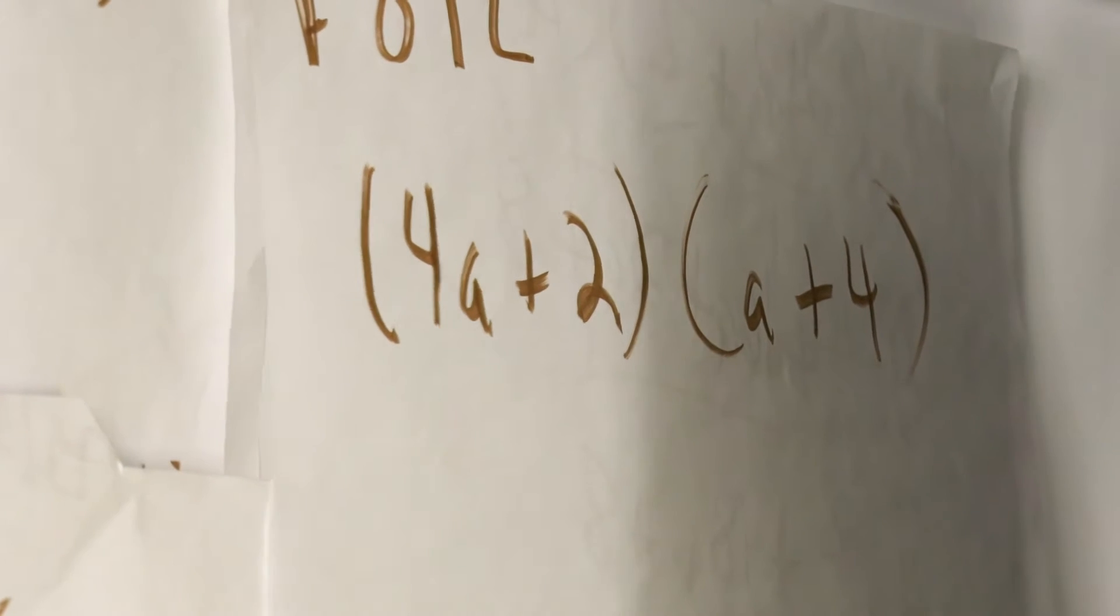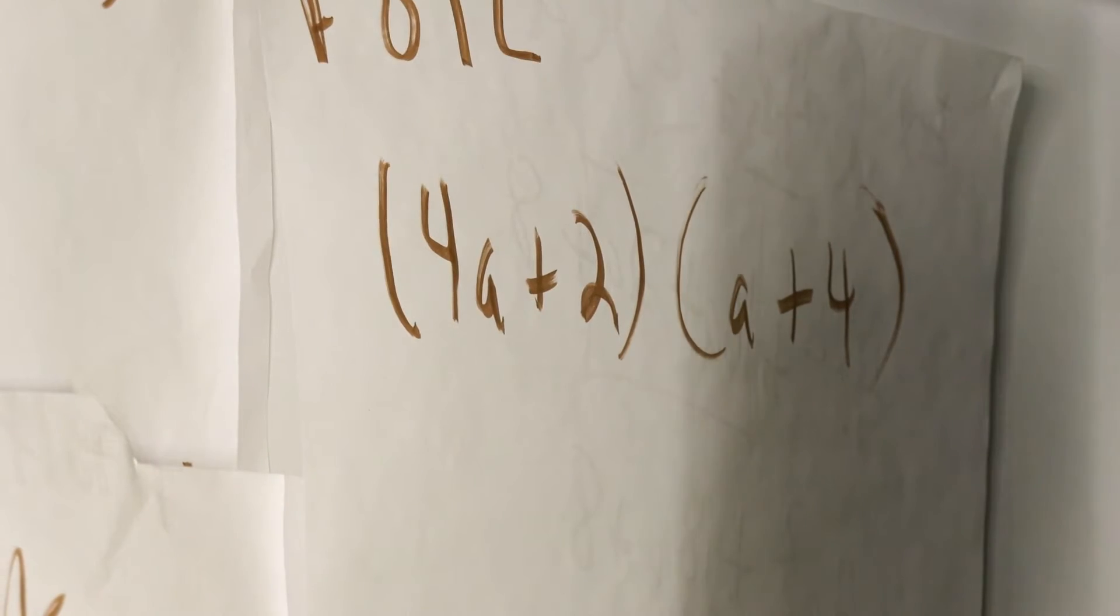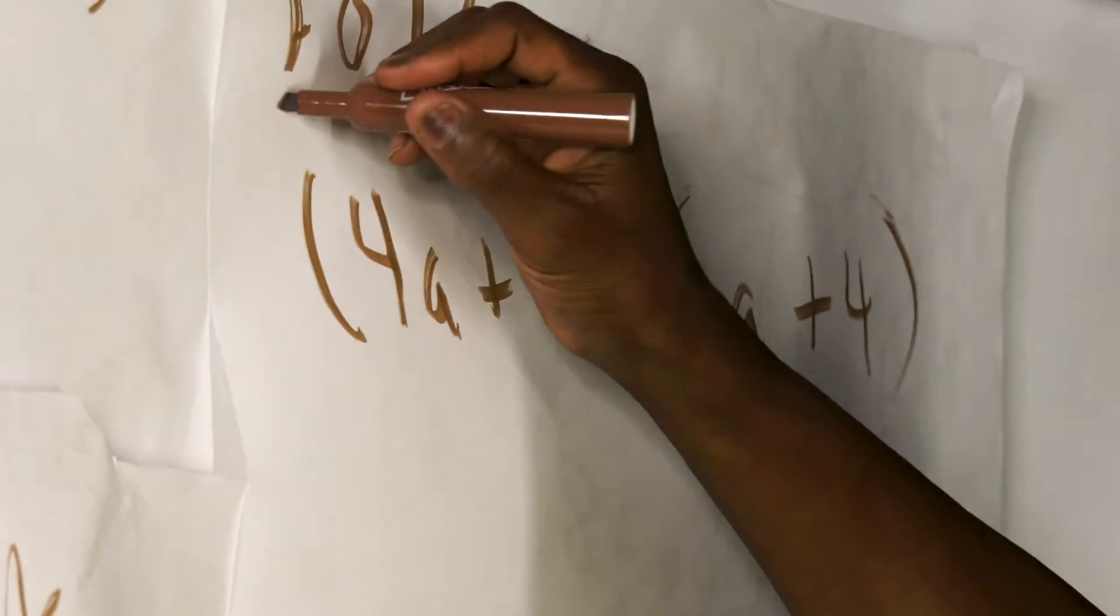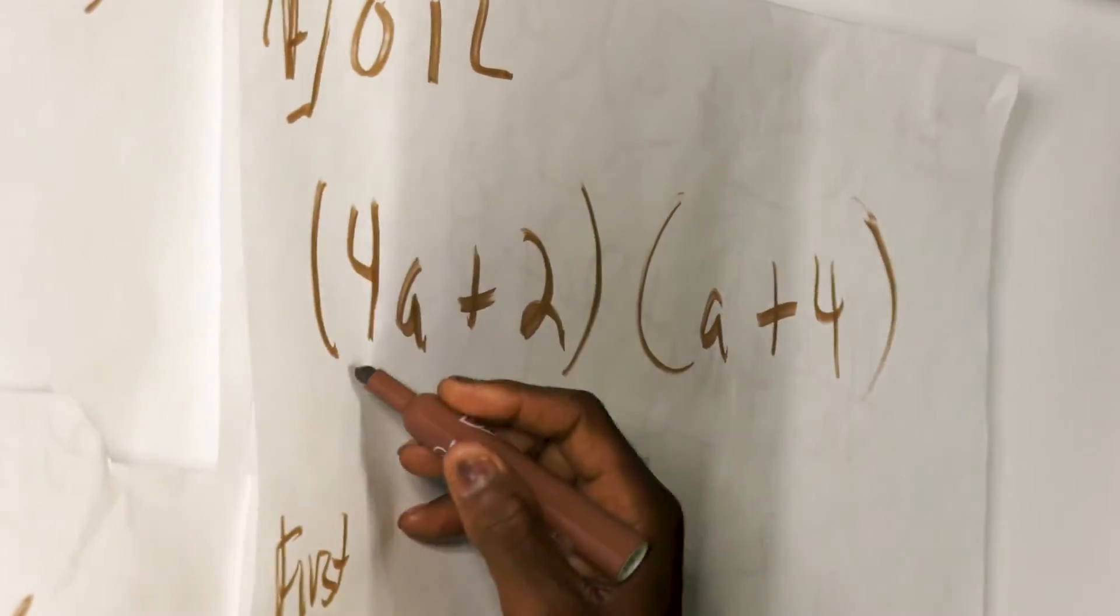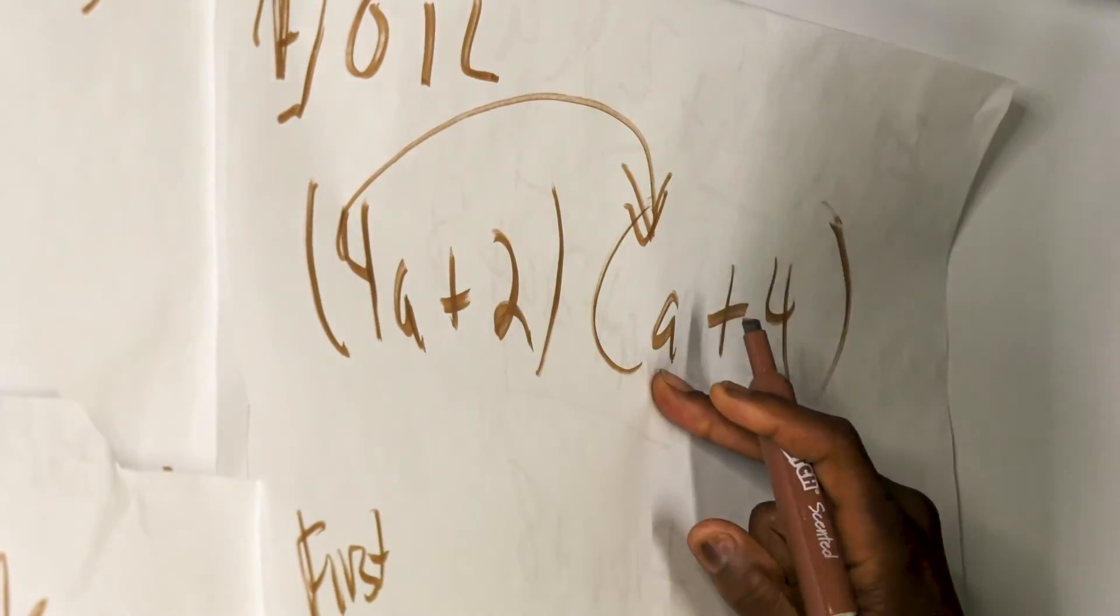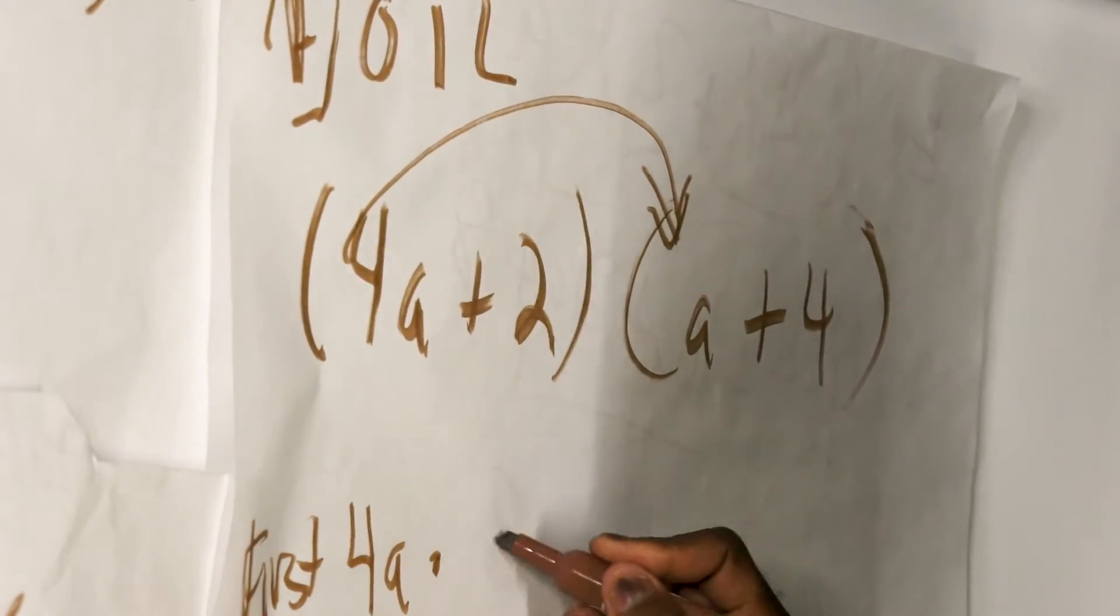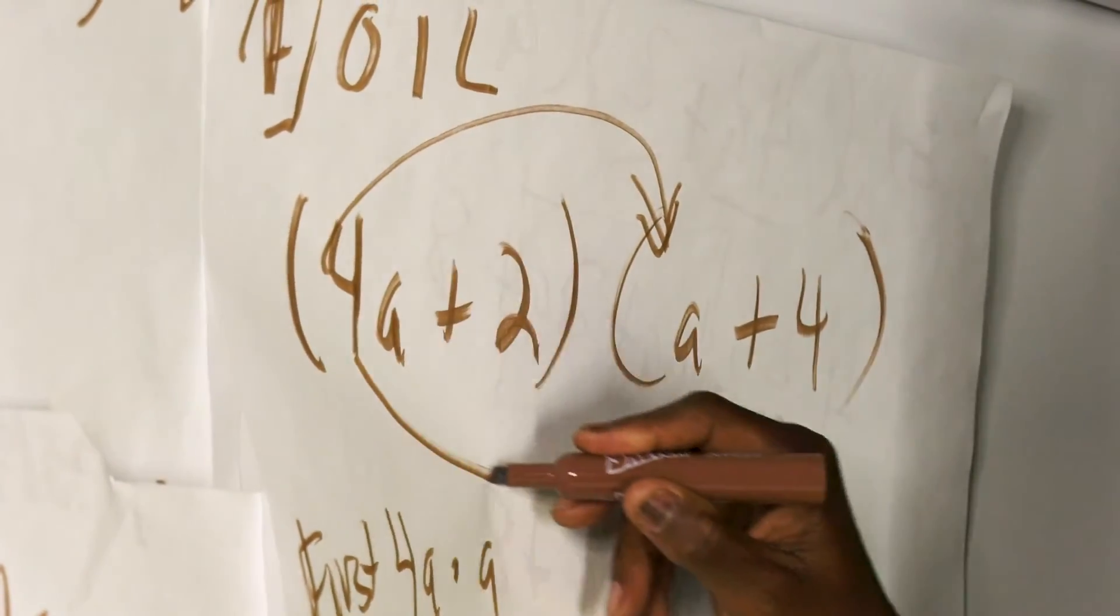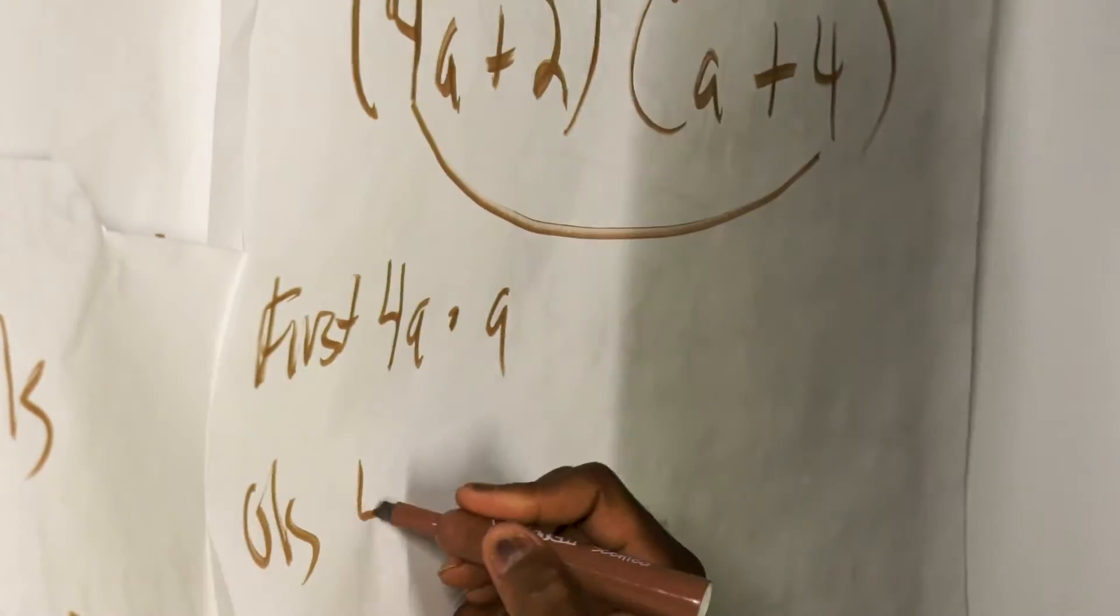So we want to think about the rules regarding distributive property because even when you're using the FOIL technique, you're really using distributive property because you're taking whatever out here and distributing it in there. But with the FOIL technique, the F stands for first. So the first thing you want to do is take 4a and multiply it by the first term there. So it would be 4a times a. That's first. Then you have outside. So this is outside and that's outside. So the outside would be 4a times 4.